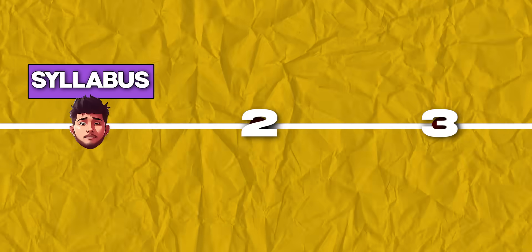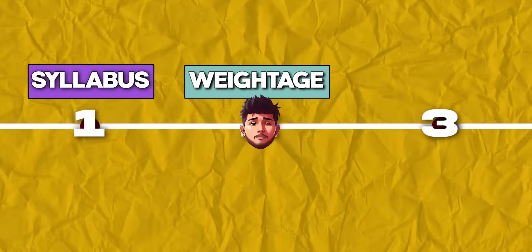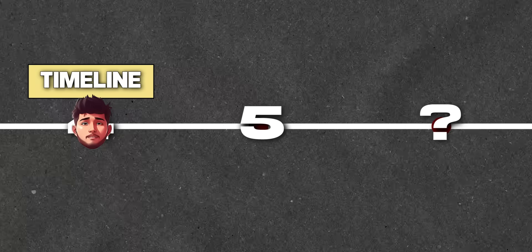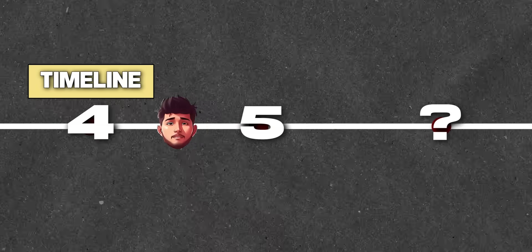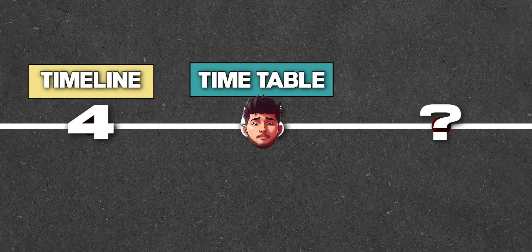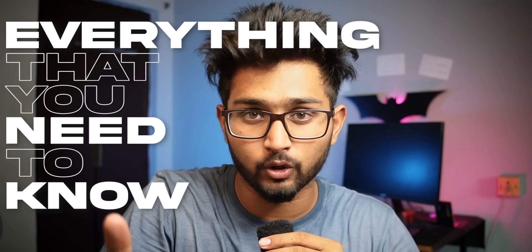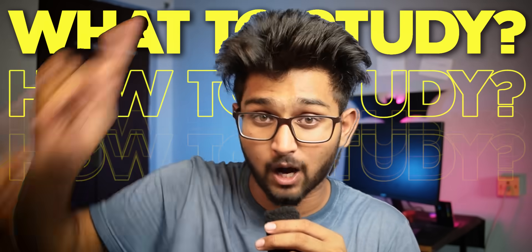So without wasting any more time, let me tell you what's there in the series. First things first, we'll be going through the syllabus of each and every subject, then we'll be seeing the weightage of the specific chapters, and then we'll talk about the best books that you need to follow in order to crack IIT JEE for all the three subjects. And after that, we'll be talking about the entire timeline to finish your entire syllabus, and we'll also discuss about how you can make the best daily timetable. And trust me, this is going to be a game changer. And at the end of this series, we'll be talking about some of the most important things that a lot of students miss out while preparing for IIT JEE. In simple words, by the end of this series, you'll know everything that you need to know from what to study to how to study. You'll have the entire roadmap for IIT JEE.